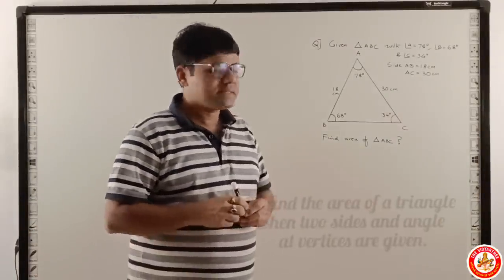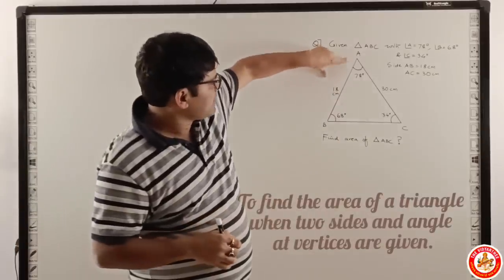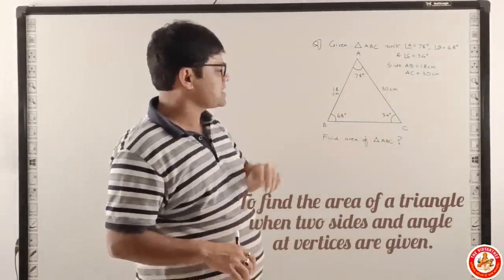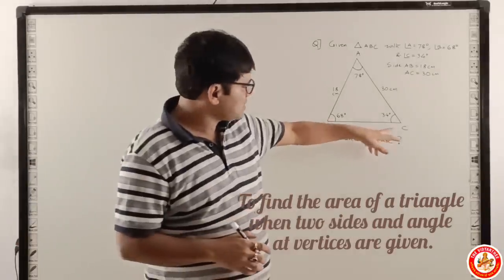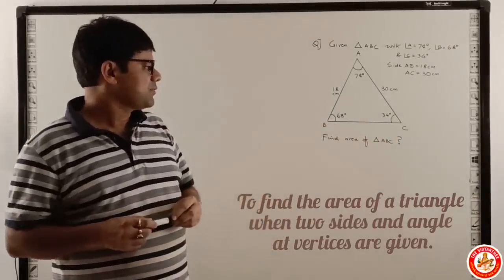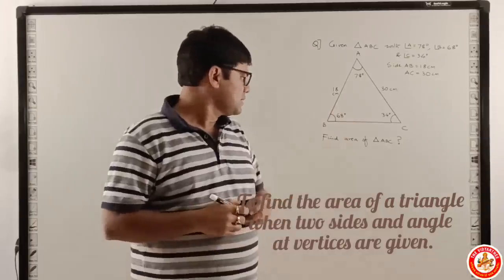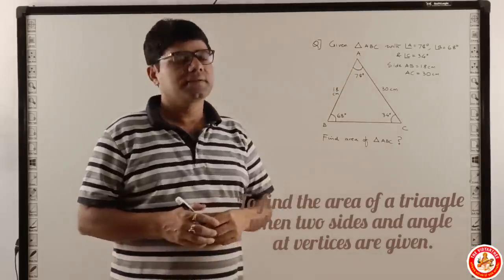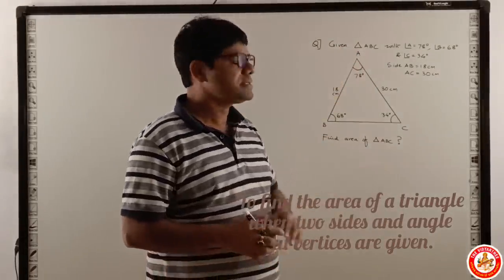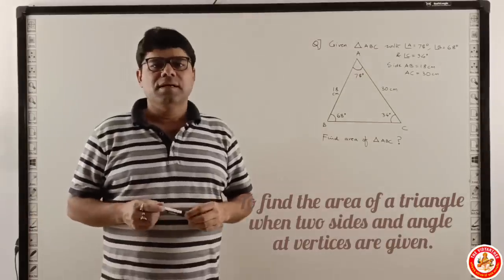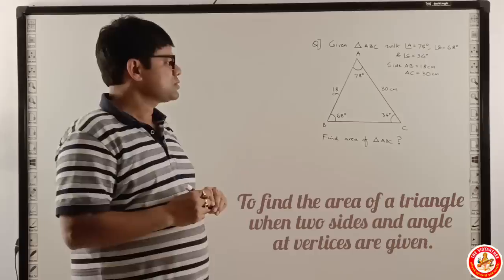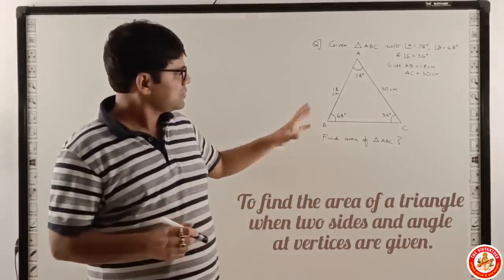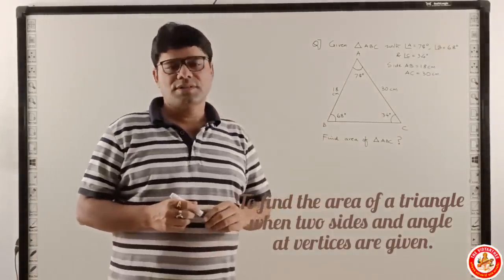Given a triangle ABC with angle A, the vertex angle is 78 degrees, the vertex angle at B is 68 degrees and the vertex angle at C is 34 degrees. You have to find the area of a triangle if only two sides have been given. AB is 18 cm and AC is 30 cm. This is not drawn to the scale, so this is only to give an idea about how the question looks like.